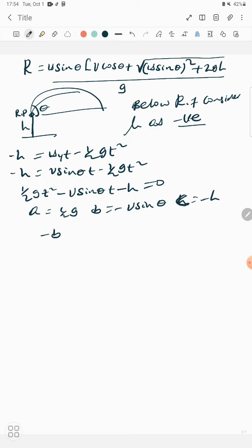Therefore, using the quadratic formula: t equals negative b plus or minus square root of b squared minus 4ac over 2a. This gives the value of t.